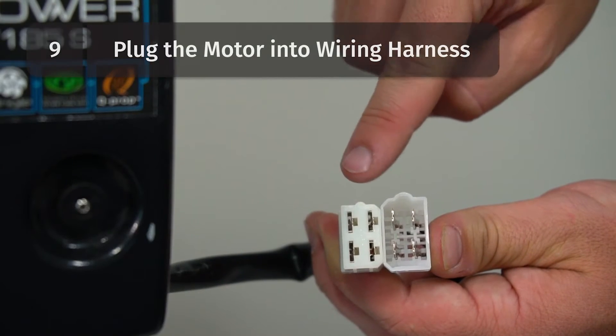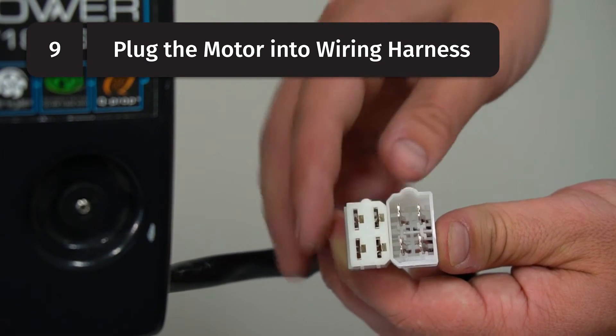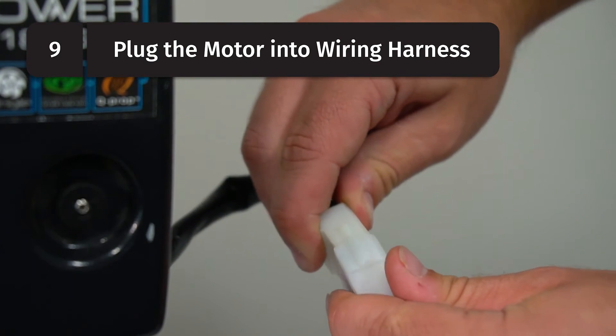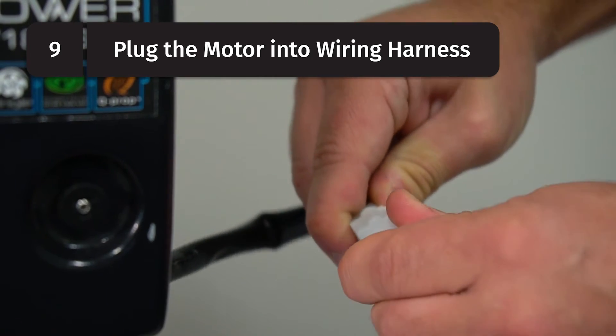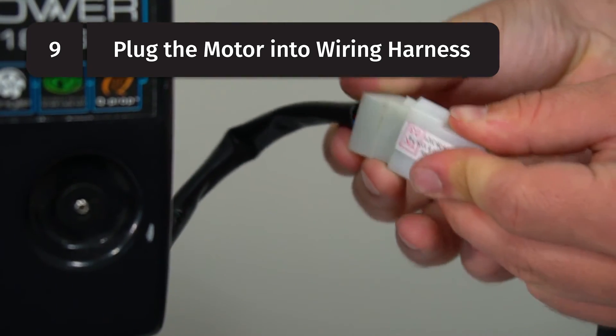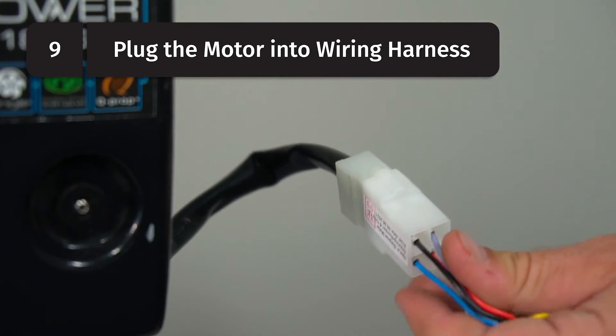Now it's time to plug the motor into the wiring harness that runs to the control at the helm. This is a four-pin quick connect that only aligns one way. Simply align the ridge on one connector with the slot on the other and plug the two connectors together.